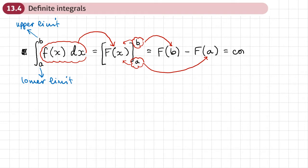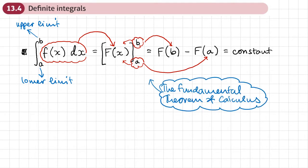This whole thing is called the fundamental theorem of calculus. This process — the fundamental theorem — allows us to work out what we call definite integrals. When we have an upper limit and a lower limit, this is no longer just called an indefinite integral — it's called a definite integral.